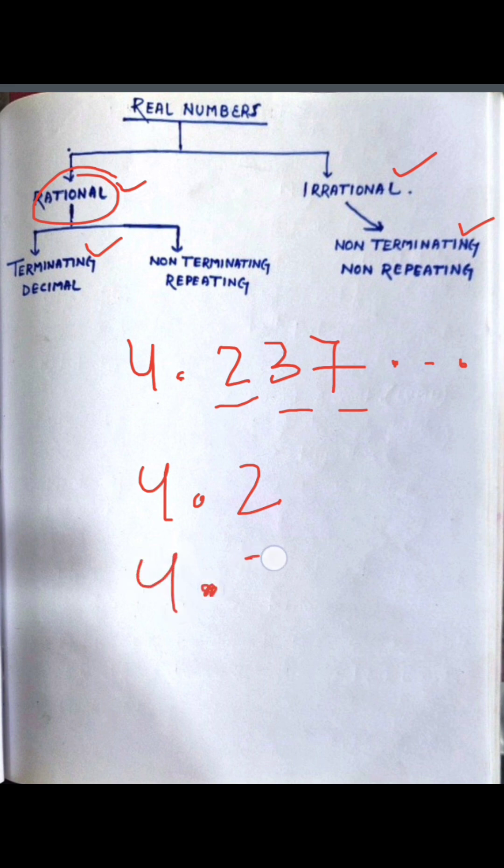When I say 2.7 bar, so this is non-terminating but repeating. So this will be our rational because we can represent it in the form.